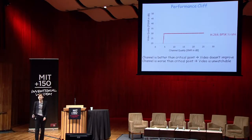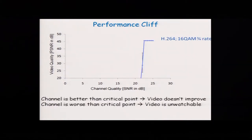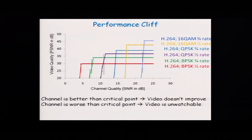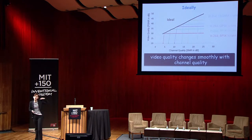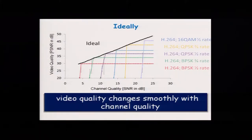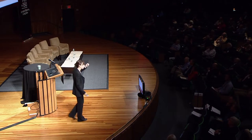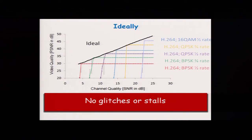You might say we can change the modulation or the error-correcting codes to get different performance — and you can, giving you different cliff points. All the possible cliff points for performance with Wi-Fi and WiMAX systems are available. But ideally you want video quality that changes smoothly with changes in wireless channel quality between your transmitter and receiver. If you can get this smooth change, there will be no glitches and no stalls because the degradation will be very gradual with minor variations, and at every instantaneous channel quality you'll get the best possible video performance.